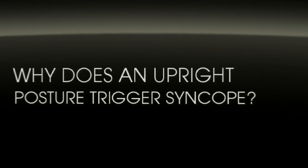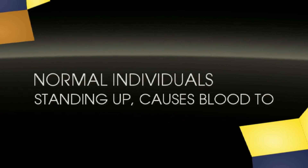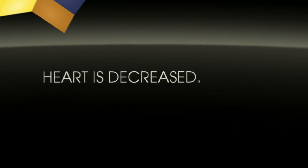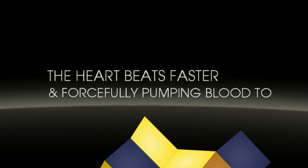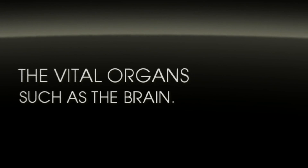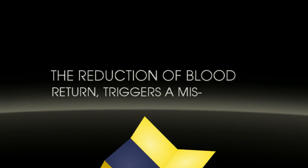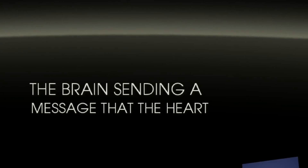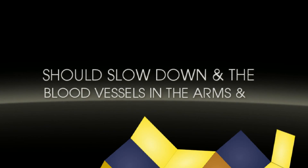Why does an upright posture trigger syncope? For normal individuals, standing up causes blood to pool in the legs and the return of blood to the heart is decreased. To compensate, the body releases adrenaline — the heart beats faster and forcefully, pumping blood to vital organs such as the brain. In those with neurocardiogenic syncope, the reduction of blood return triggers a miscommunication between the heart and the brain, causing the brain to send a message that the heart should slow down and blood vessels in the arms and legs should dilate.